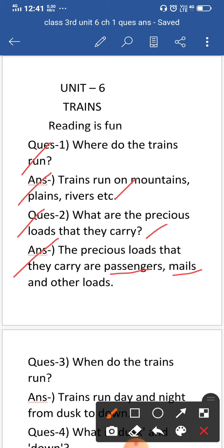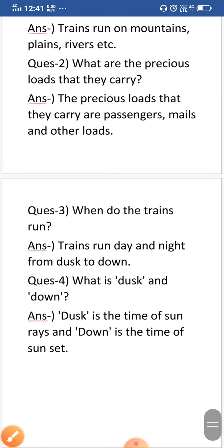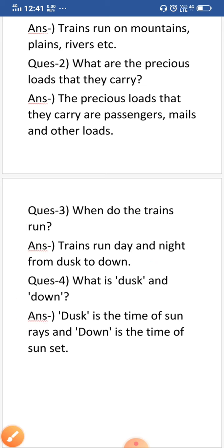Okay now question number third when do the trains run? So the answer is trains run day and night from dusk to down. Now question number four, what is dusk and down? So the answer is dusk is the time of sun rays and down is the time of sunset. Okay got it, so your question answer is completed now.